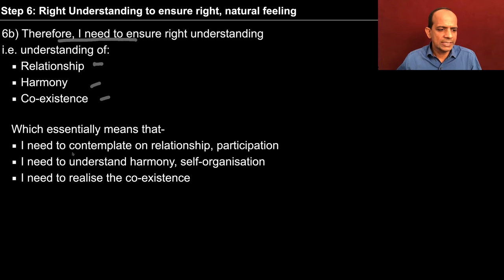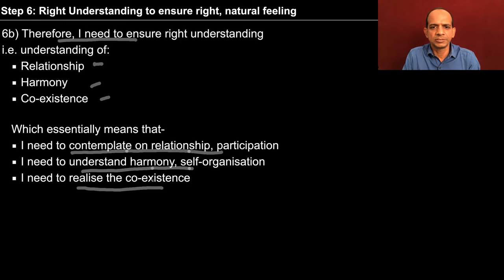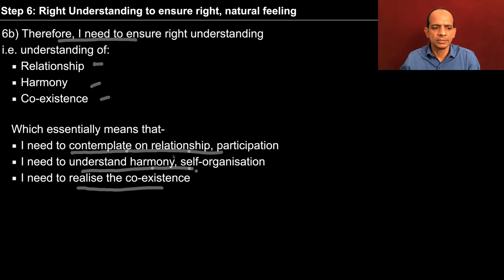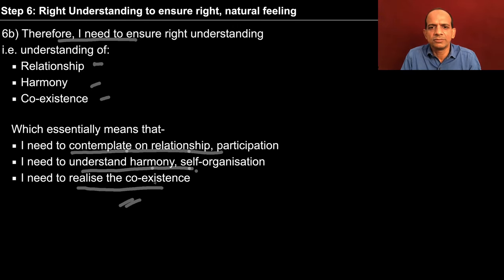This essentially means that I need to contemplate upon relationship, that is participation. I need to understand harmony, that is self-organization. And I need to realize the coexistence — that essentially means I need to realize the submergence of nature in space. I need to understand the harmony, that is the self-organization in the four orders of nature. I need to contemplate upon the relationship, participation in the larger order of every unit. So this is the conclusion that we draw in step six, that I need to understand this through contemplation, understanding and realization within the self, by the self.